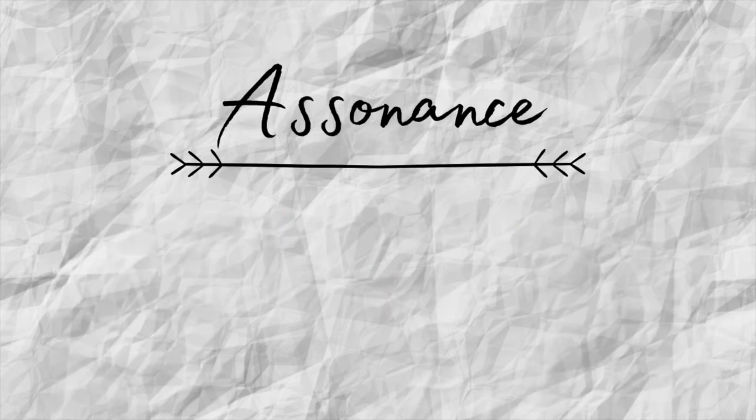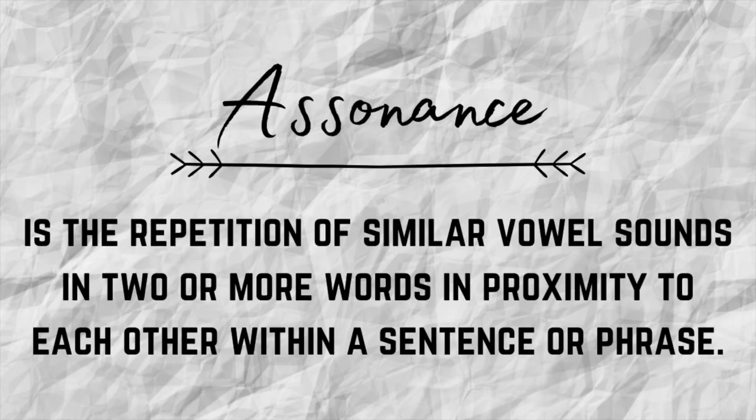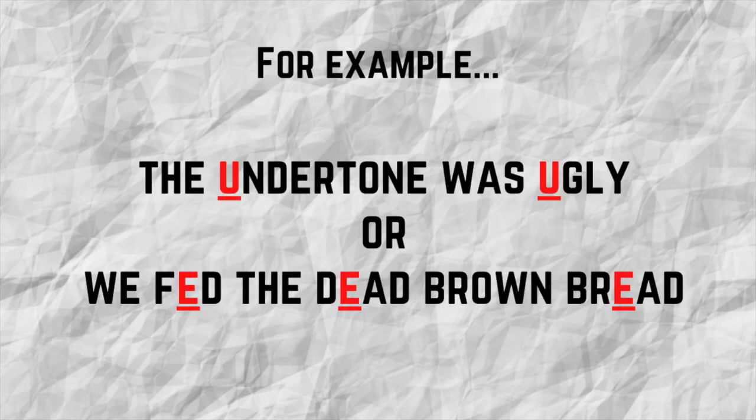Assonance is the repetition of similar vowel sounds in two or more words in proximity to each other within a sentence or phrase. For example, the undertone was ugly, or we fed the dead brown bread.